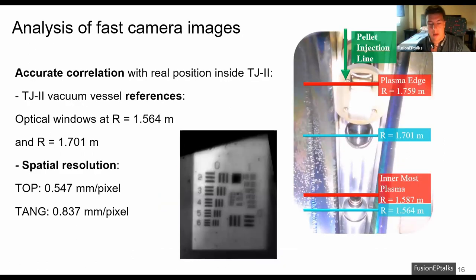But before the analysis, we have to establish an accurate correlation between the pixels in the image and the real position inside the TJ2 vacuum vessel. For that, we use two optical windows as references that allow us to elucidate where the plasma is and the center of the plasma. In addition to this, we use a test card of known sizes and distances to elucidate the spatial resolution of the camera.